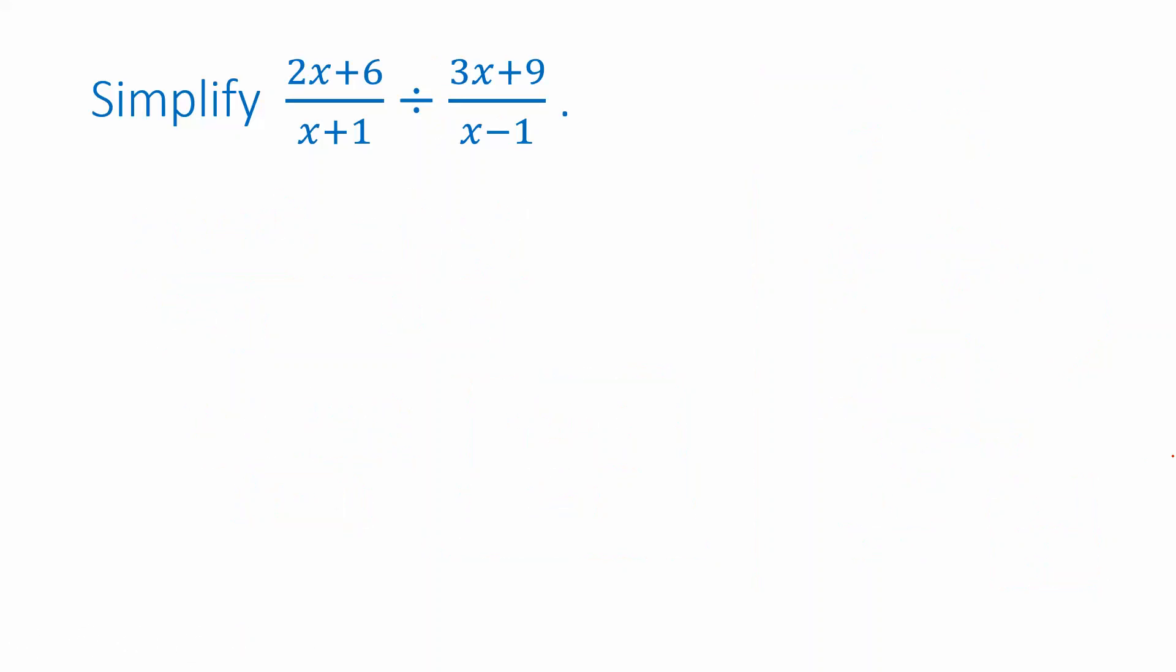How about division? Well, when we divide fractions, for example, 3 fifths divided by 9 halves, we think of division as multiplication by a reciprocal. So instead of writing divided by 9 halves, we can instead think of it as multiplication by 2 ninths. And then it's just like simplifying a product, because it is a product. So we factor what we can, cancel what we can, and we'd be left with 2 over 5 times 3 or 2 fifteenths. So remember that as an example of the ideas we'll use for simplifying a division of rational expressions.